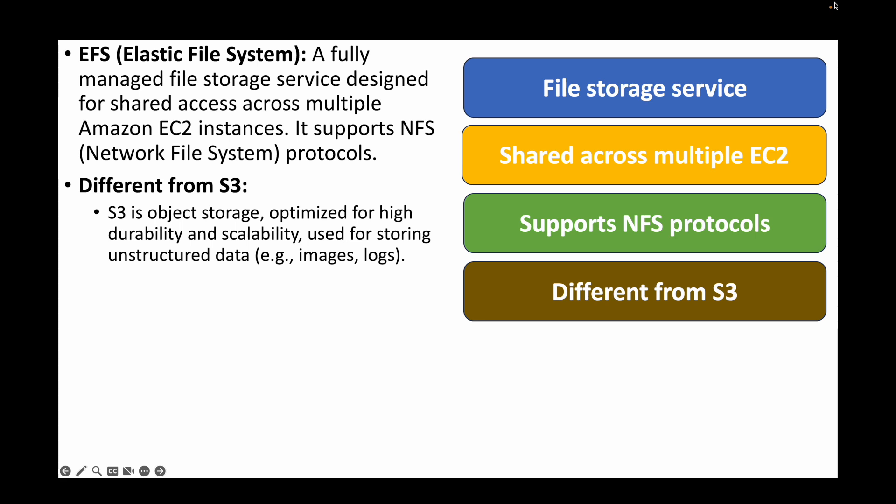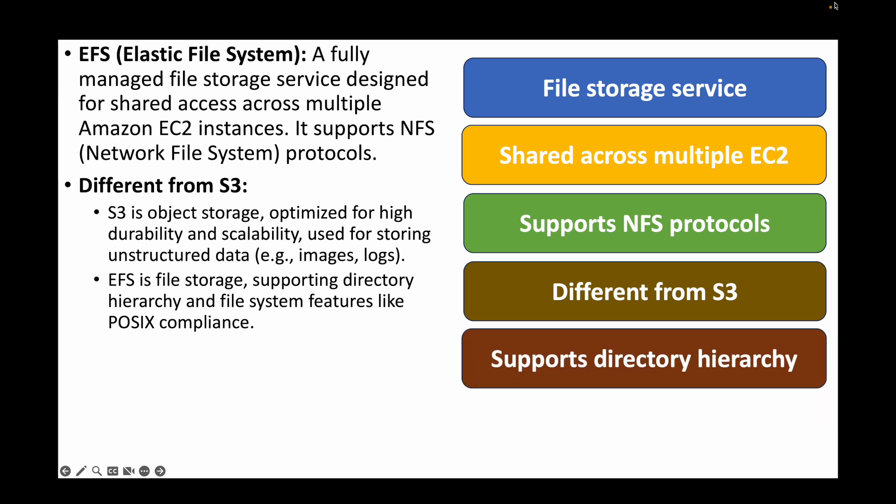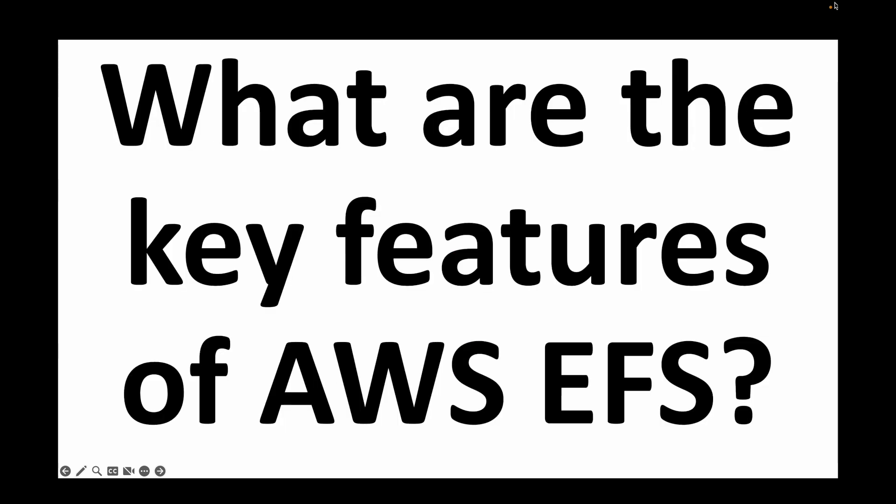How is EFS different from S3? S3 is object storage optimized for high durability and high scalability, mainly used for storing unstructured data. EFS, on the other hand, supports directory hierarchy and file system features like POSIX compliance. Compared to EBS volumes, EBS is block storage tightly coupled with your EC2 instance — you cannot share EBS volumes with other EC2 instances, unlike EFS.